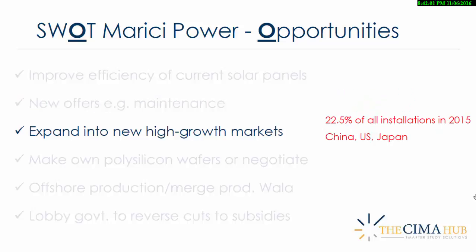There seems to be a push towards utility-scale installations given how cost effective they are, and the same subsidy cuts we see in Freeland don't look like they'll be extended to utility-scale installations — they're focused instead on domestic and smaller-scale installations. So Marici could usefully consider branching into utility-scale projects. They can also consider going into new markets — there's clearly high growth in the solar market, with 22.5% of all installations implemented in 2015 alone. But that growth is not happening in Marici's traditional markets — not in Freeland, not in Western Europe.